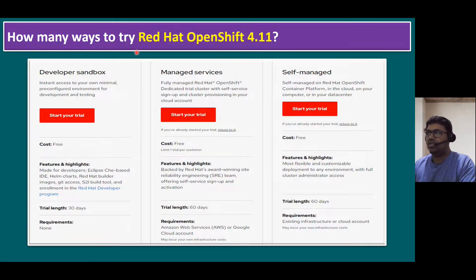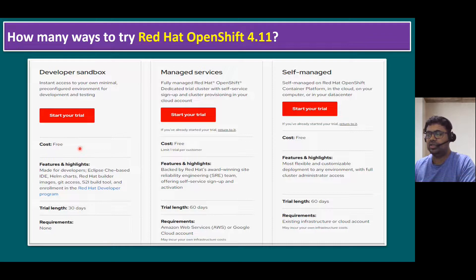If you want to run or try Red Hat OpenShift in your test environment, there are three methods. The first one is the developer sandbox, available directly from the Red Hat website. It provides instant access to a minimal pre-configured environment for development and testing. This is a trial edition only, there is no cost, it's available for 30 days, and there are no requirements — you can access it directly from the Red Hat website.